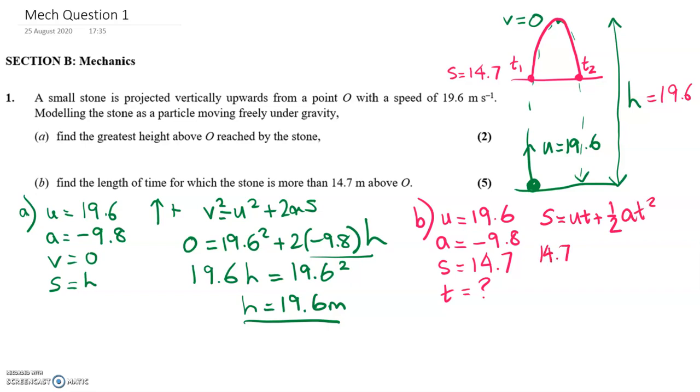So put in all your values, 14.7 equals 19.6T minus 4.9T squared. Right, it looks like we can divide everything here by 4.9. So we get 3 equals 4T minus T squared. So this looks like a nice quadratic that we can solve.